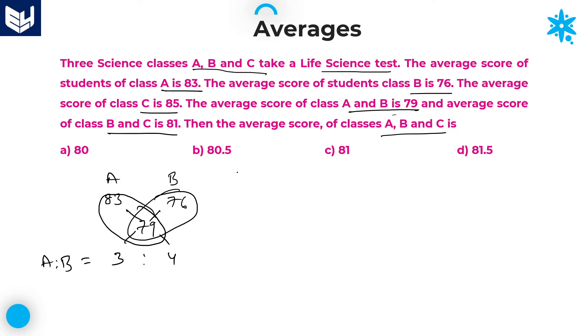In the similar fashion, you can do it for B and C also. Why? Because A and B, B and C, both together values are given. Here B individual value is 76. C individual value is 85. B and C together value is 81. Here according to allegation principle, again the difference between these two is 4 and the difference between these two is 5. So B is to C is equal to 4 is to 5.